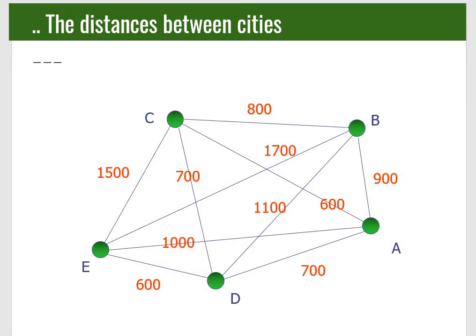The distance between each pair of cities is given. For example, city A to city B is 900 kilometers. B to C, C to E — C and E are quite far — E to B is 1700, E to A is 1700, B to D is 1100, and E to A is 1000. So between every two cities, the distance is provided.